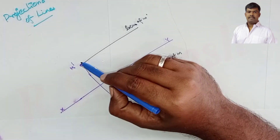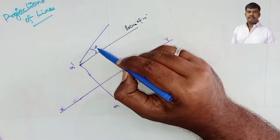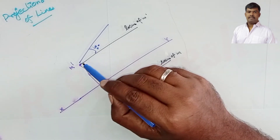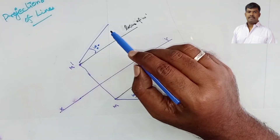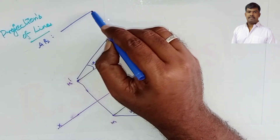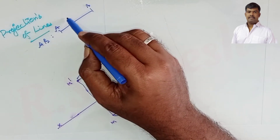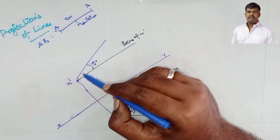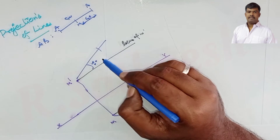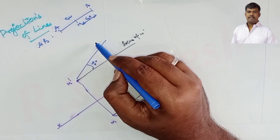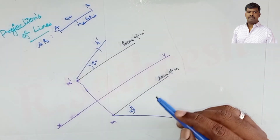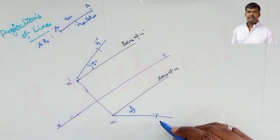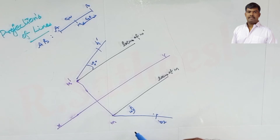The line is inclined 30 degrees to HP and 45 degrees to VP. The total length AB is 80 mm, so M to B is 40 mm. Take 40 mm as the radius and m-dash as the center, intersect an arc on the 30-degree inclined line — this gives b1-dash (front view). Similarly, from m, mark a 40 mm distance along the 45-degree line — this gives b2 (top view).